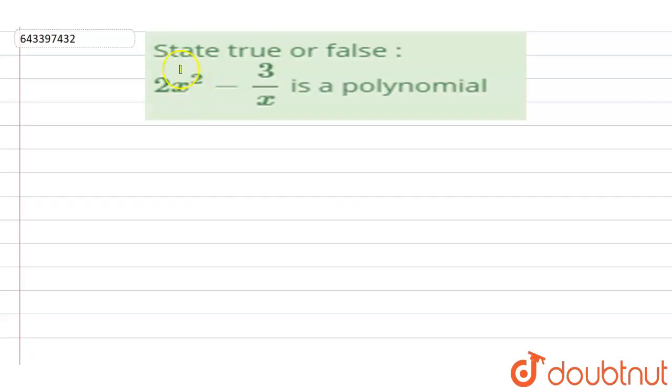Hi, let's start the question. The question says to state true or false. The statement is given as 2x squared minus 3 upon x is a polynomial.